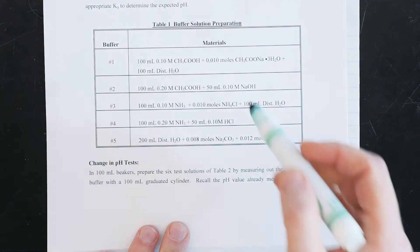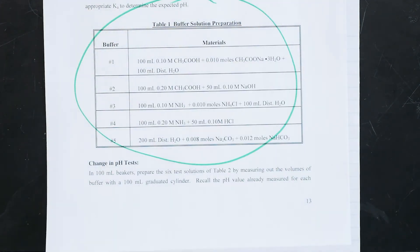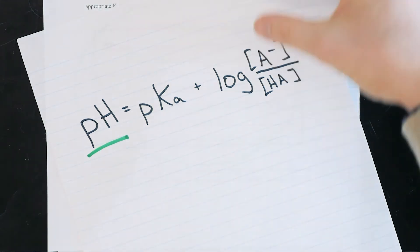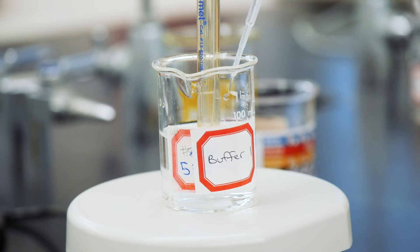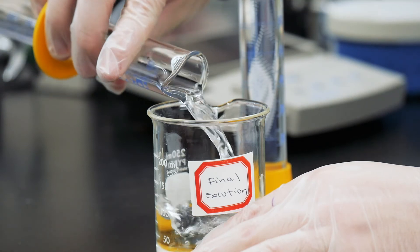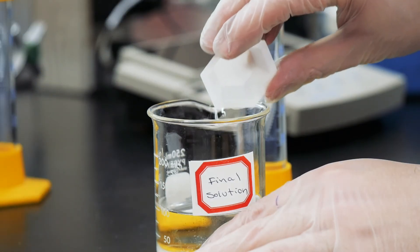In today's experiment, we'll be preparing our very own buffer solutions, calculating their pH, and then checking their pH experimentally. Additionally, we'll add some strong acid and base to our buffer solutions to see how well they can actually maintain pH when put under stress. Then finally, we'll design a buffer from scratch to maintain a specific pH of our choosing.